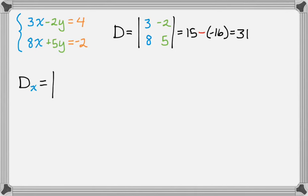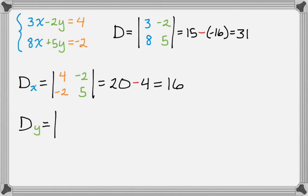D sub x. Remember, I'm going to remove the column 3, 8, and replace it with 4 negative 2. So it's 4 negative 2, and then that. So it's going to be 20 minus 4, which gives me 16. And then D sub y, I go back to the original D, and I replace the column for y, which was negative 2, 5, with the constants, which were 4 negative 2. So that gives me this determinant. So that's going to be negative 6 minus 32, which is negative 38.